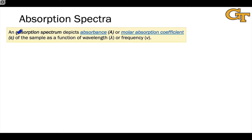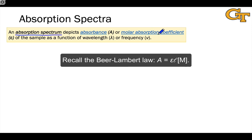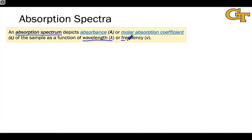When doing an absorption experiment and looking at the amount of light transmitted — or equivalently the amount absorbed by a sample as a function of wavelength — we're generating an absorption spectrum. It depicts absorbance on the y-axis, or more commonly the molar absorption coefficient epsilon, which is independent of concentration and path length. The x-axis shows wavelength or frequency, and very commonly frequency is expressed in wavenumbers — inverse centimeters or inverse micrometers. Electronic transitions can be in the tens of thousands of inverse centimeters and greater.